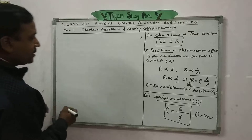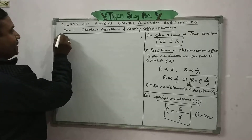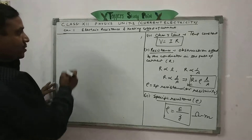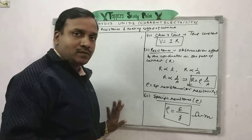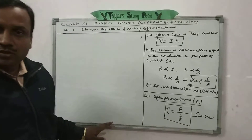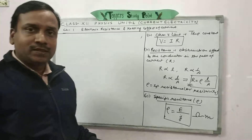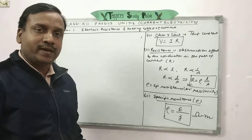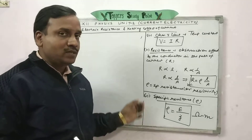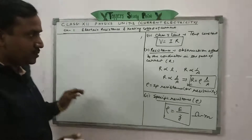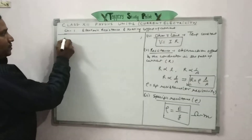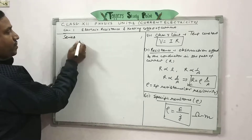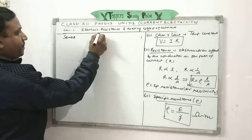Now let's discuss a few more formulas about resistance. In series combination, the first end of each resistance is connected to the second end of the next resistance. In parallel combination, the first end of each resistance is connected to the positive terminal of the battery and the second end to the negative terminal. There are two key formulas for series and parallel combinations.